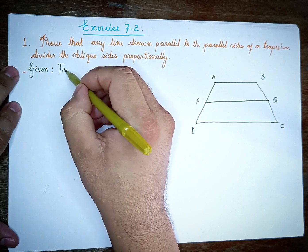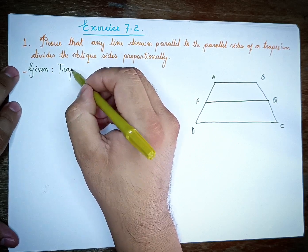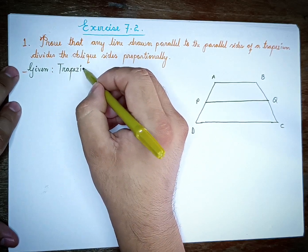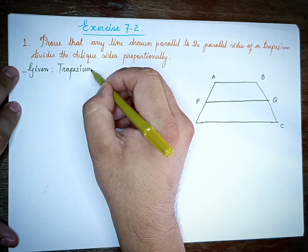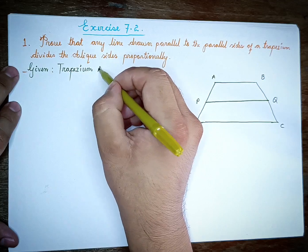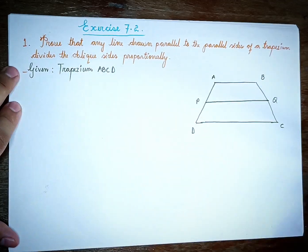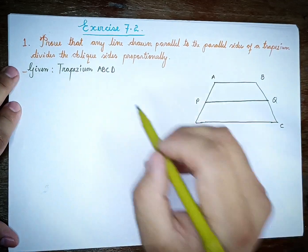Trapezium. A, B, C, D is a trapezium. Divide the oblique sides proportionally.